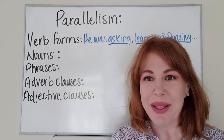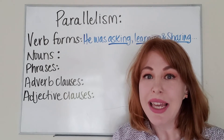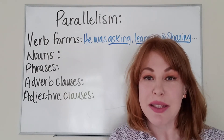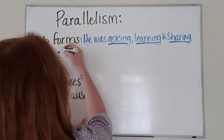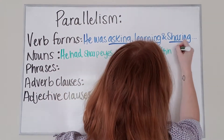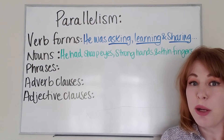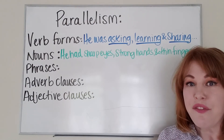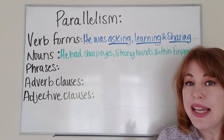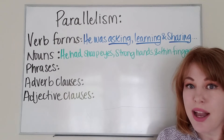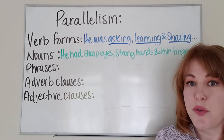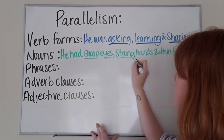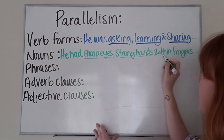The next way we use parallelism in our writing is through the representation of nouns in a piece of writing. For example, 'he had sharp eyes, strong hands, and thin fingers.' I am presenting each noun with an adjective that goes before it: sharp eyes, strong hands, and thin fingers.